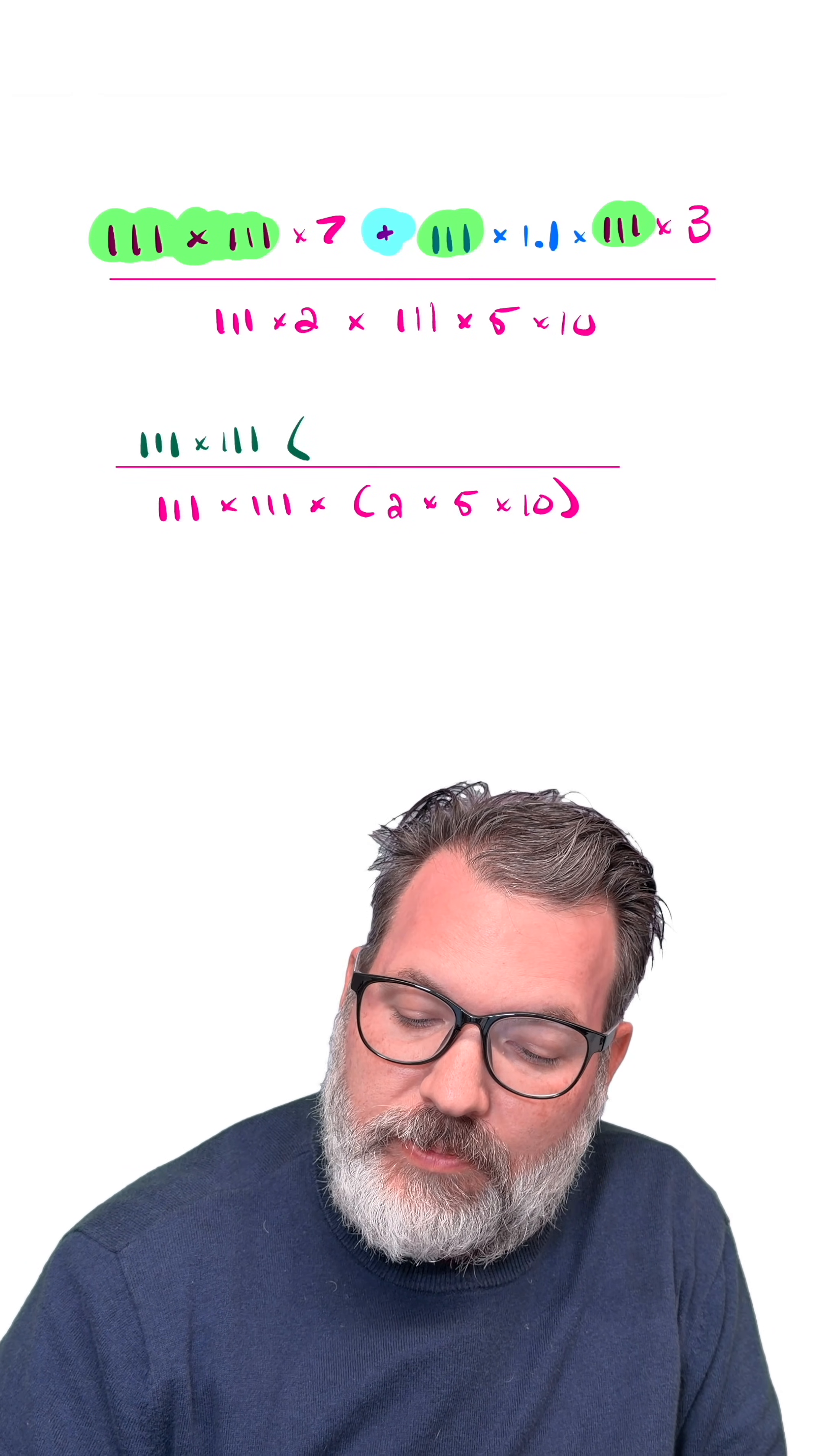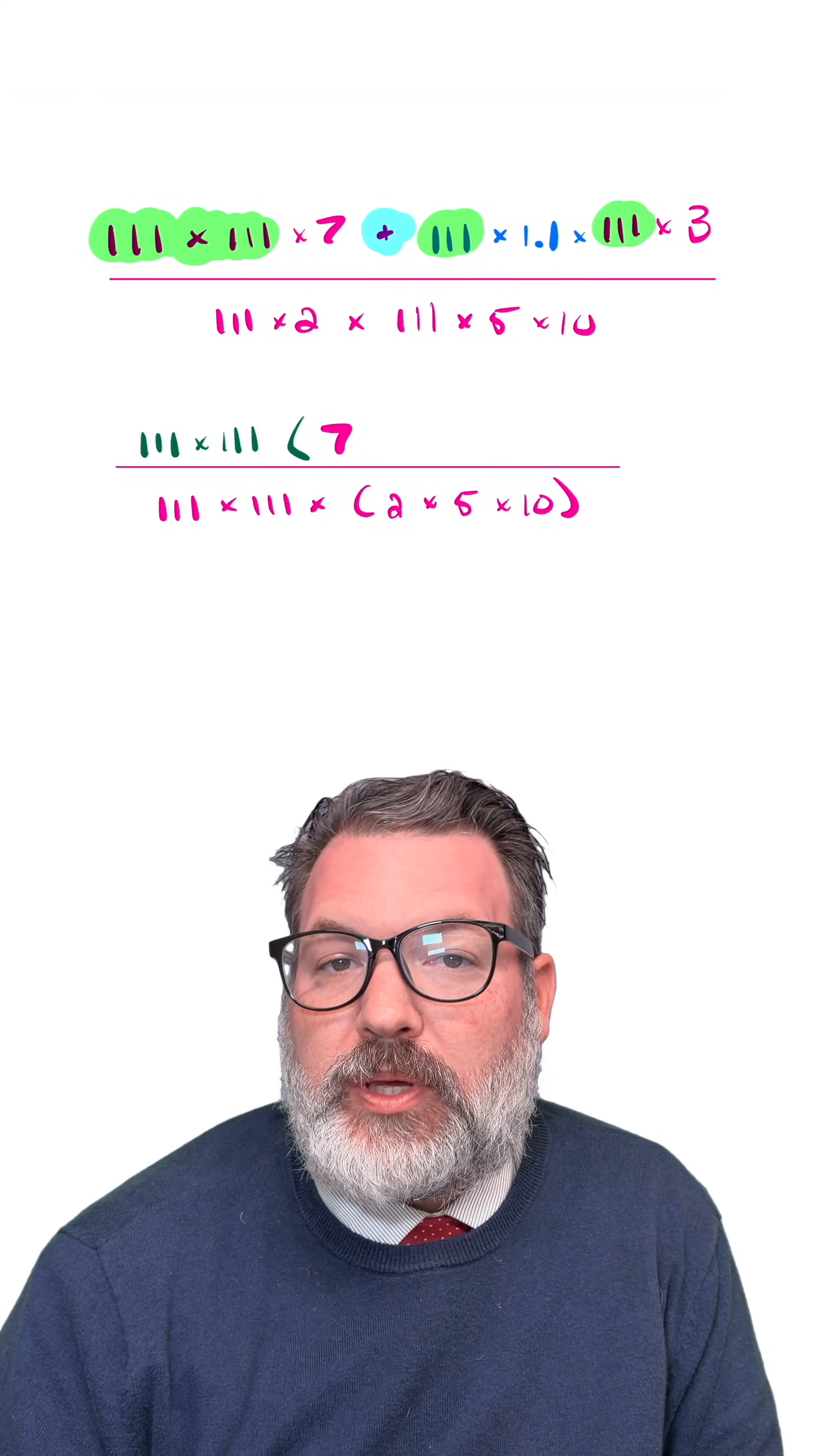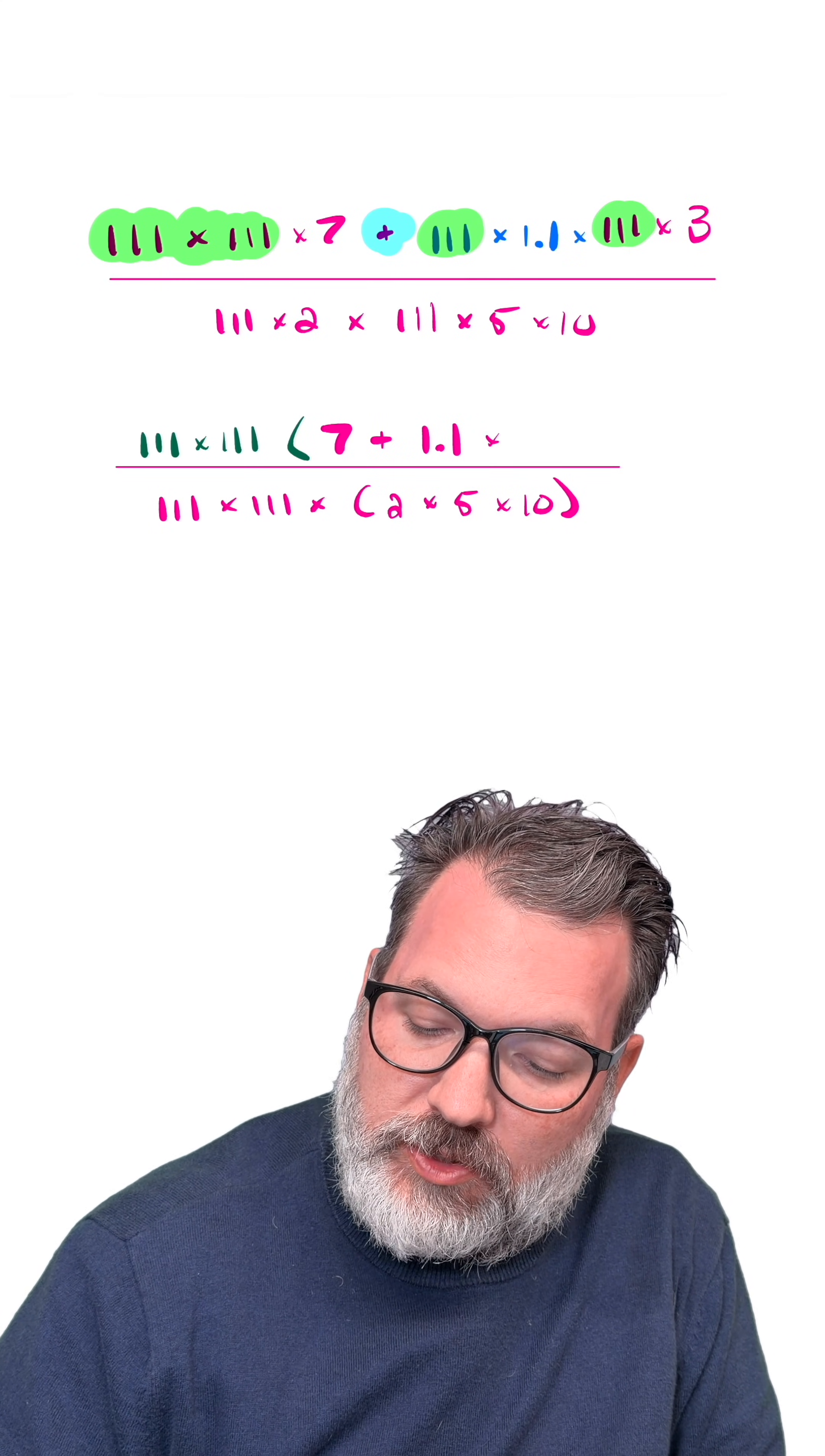This is the same thing as 111 times 111 times the quantity 7, that's this 7 left over from up here, plus the other stuff that was left over from the second part of our sum, 1.1 times 3.